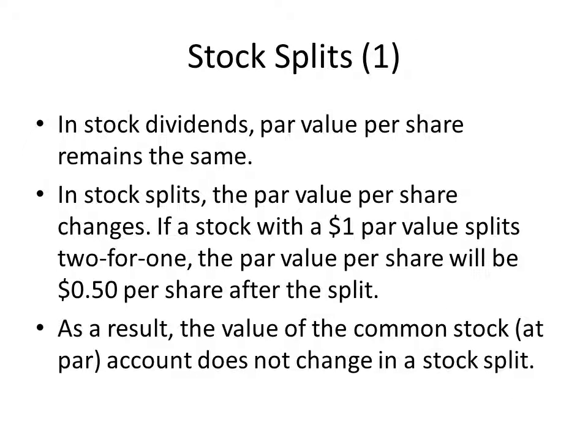Now we're going to talk about stock splits. In stock dividends, the par value per share remained the same, so we adjusted the common stock at par account upward. In stock splits, it's different — the par value per share will change. For example, a stock with a $1 par value split two-for-one results in a new par value of $0.50 per share. As a result, the value of the common stock at par account doesn't change in response to a stock split — it stays exactly the same.